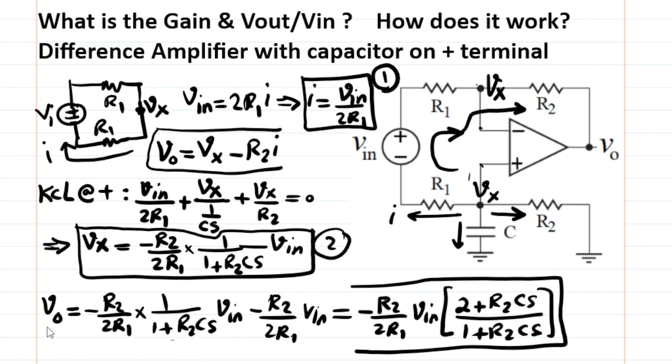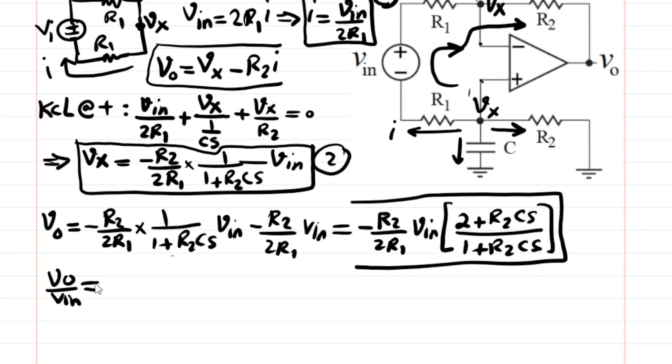effectively, you can say Vout over Vin, which is my H of S or transfer function, is negative R2 over 2R1 times 2 plus R2 Cs divided by 1 plus R2 Cs. This is my transfer function.